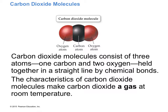Every molecule of carbon dioxide has three atoms: two oxygen atoms and one carbon atom. I apologize if I get the colors wrong — I have a color perception problem. The red or brown color is oxygen and the black is carbon. So it's one carbon bound to two oxygens.